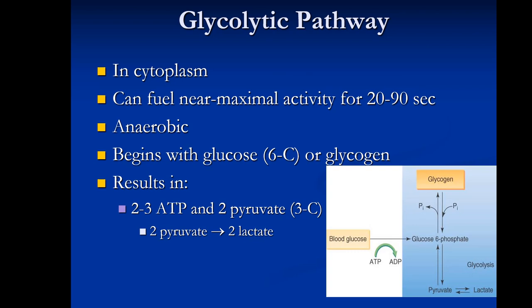The glycolytic pathway involves the breakdown of carbohydrate and occurs in the cytoplasm. It can fuel near-maximal or maximal activity for approximately 20 to 90 seconds, taking over when the immediate pathway is depleted. It is anaerobic — does not require oxygen. Starting with carbohydrate in the form of glucose or glycogen, the end result is two to three ATP and two molecules of pyruvate, which under anaerobic conditions are converted to lactate.